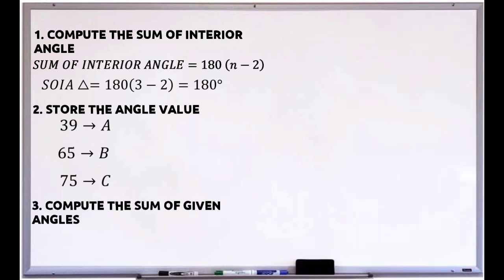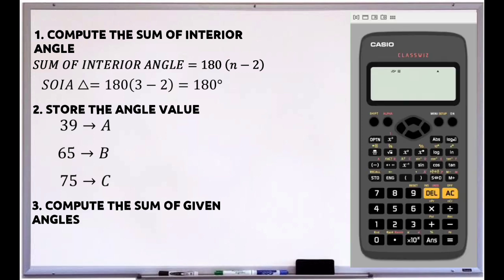The next step is to compute the sum of the given angles. The angle A has 39 degrees. The angle B has 65 degrees. And angle C has 75 degrees. The sum of those angles is 179 degrees.